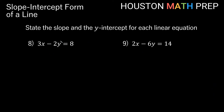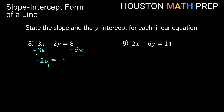Looking at our last two examples: 3x minus 2y equals 8. To get the y term by itself, we need to subtract 3x first. That puts the x term on the right side instead of the left — don't forget your negative here. We get negative 2y equals negative 3x plus 8.